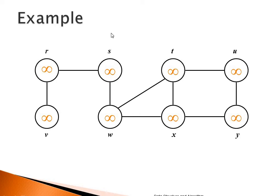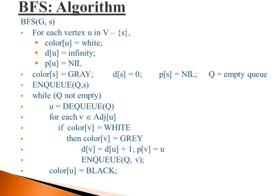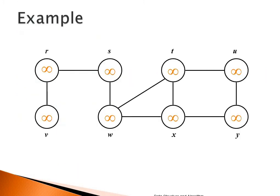For the initial (source) vertex, there is no other vertex before it, so the parent of this vertex is nil. This is the initialization part of the algorithm: for each vertex U in V minus s, color of U is white, distance of U is infinite, and parent of U is nil. Here s is the source vertex, all vertices have infinite value and are in white color.